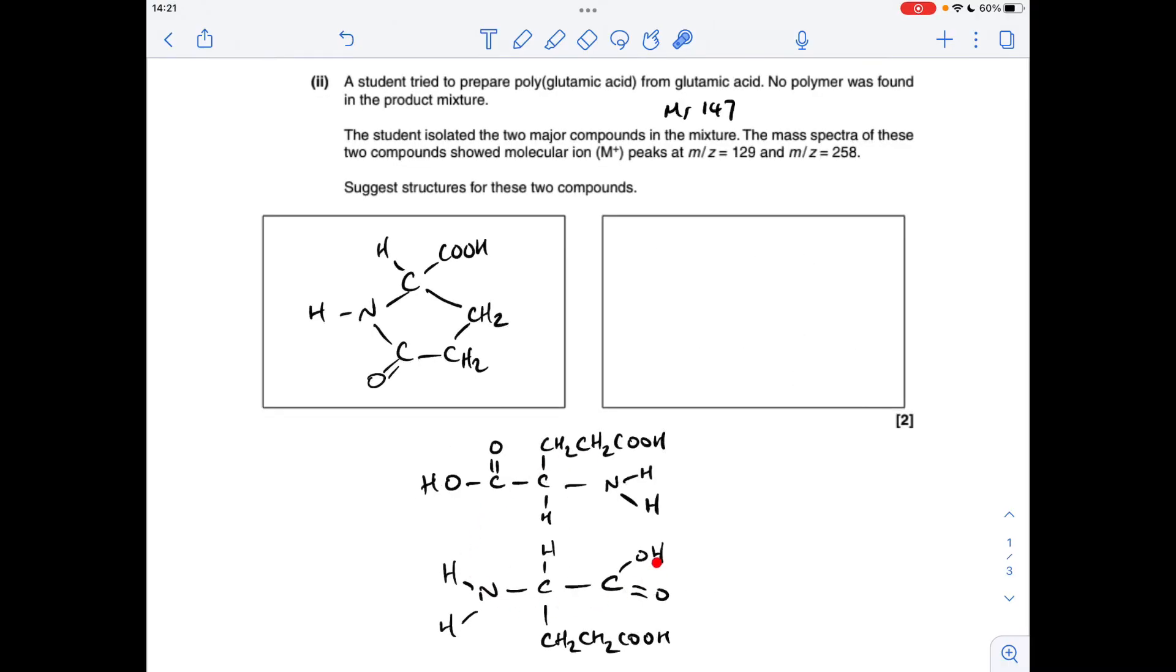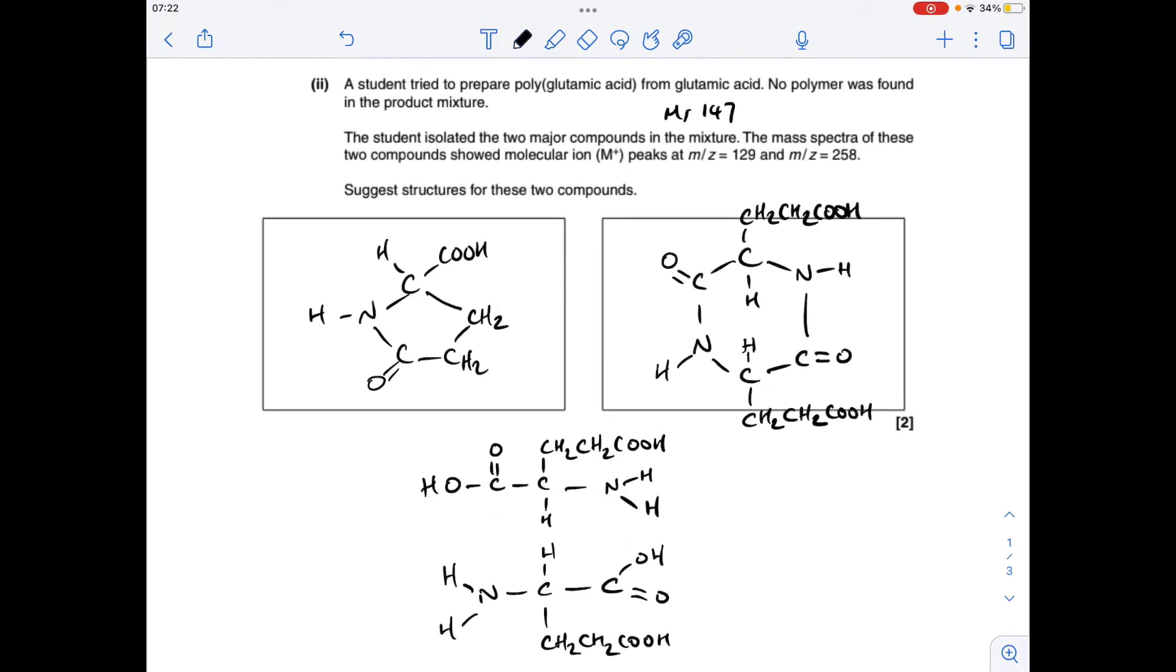The other way two of these can join together is if we take still the NH2 group but now the other COOH group. I've redrawn it again, positioning the key functional groups opposite each other. We'll just do the same again—we'll get rid of a water molecule here and the water molecule here, and then turn what's left into a ring, which gives a structure that looks like that.